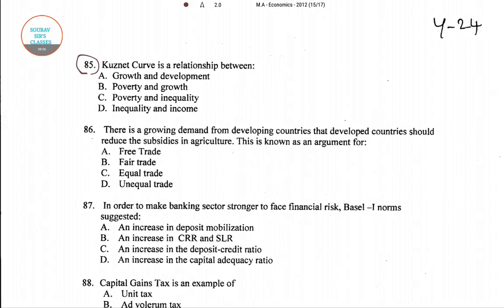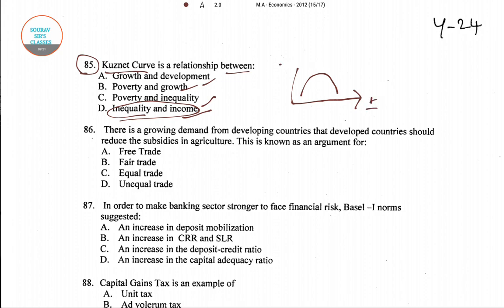Question number 85: The Kuznets curve is a relationship between — growth and development, poverty and inequality, poverty and growth, or income inequality and income. Option D is the right answer — the Kuznets curve shows the relationship between income inequality and income. When income increases, inequality first rises then starts to fall, giving a U-shaped curve. So for question number 85, the right answer is option D.